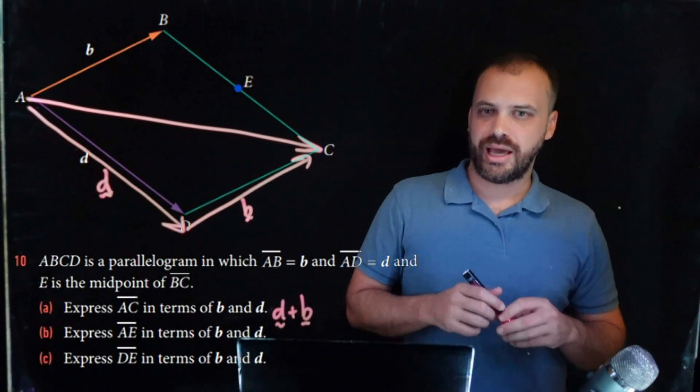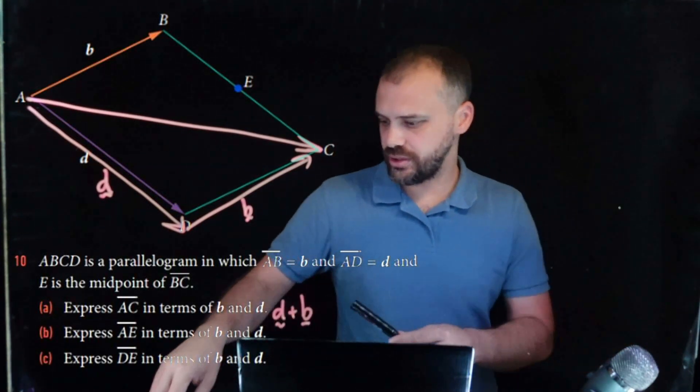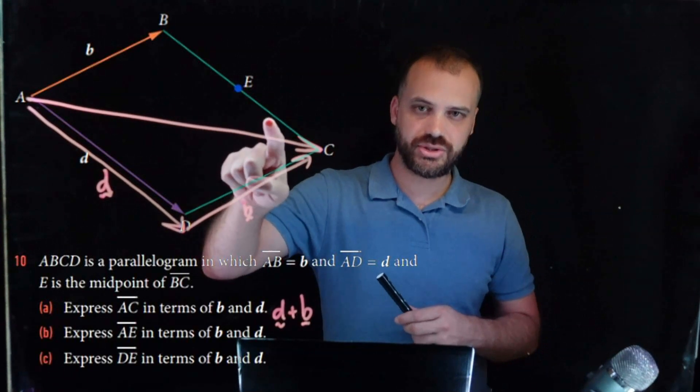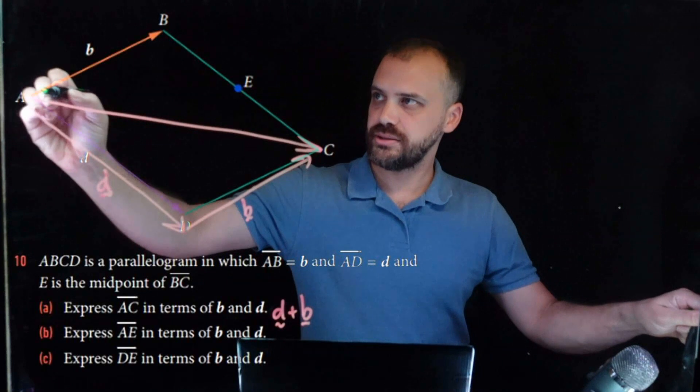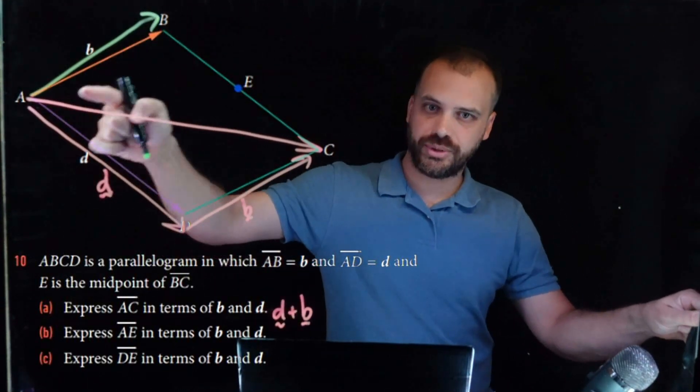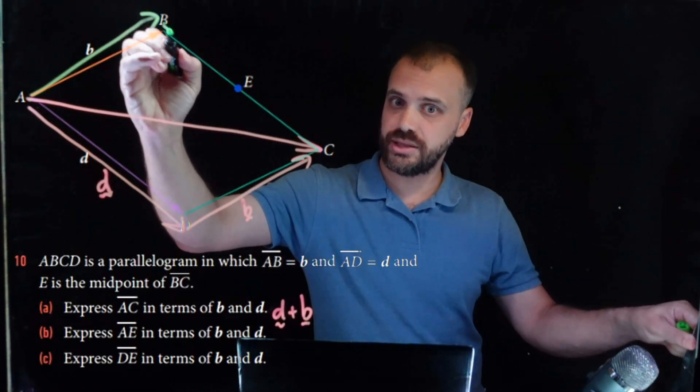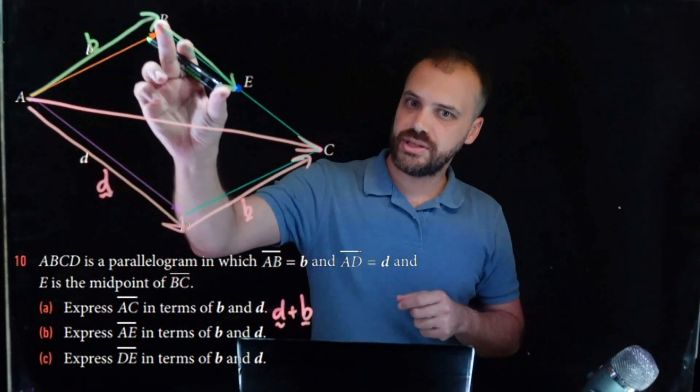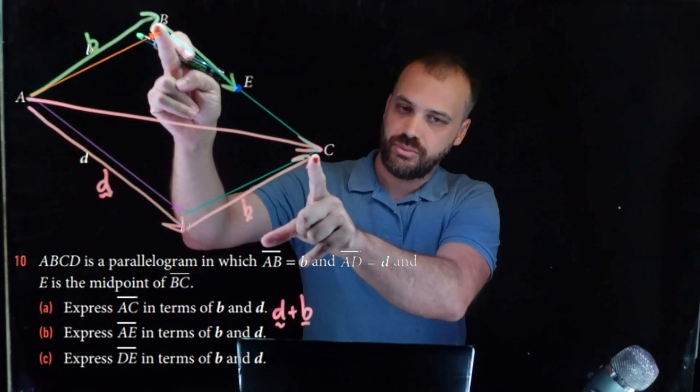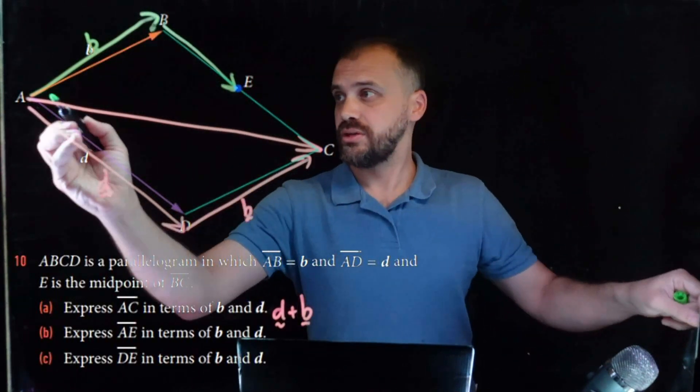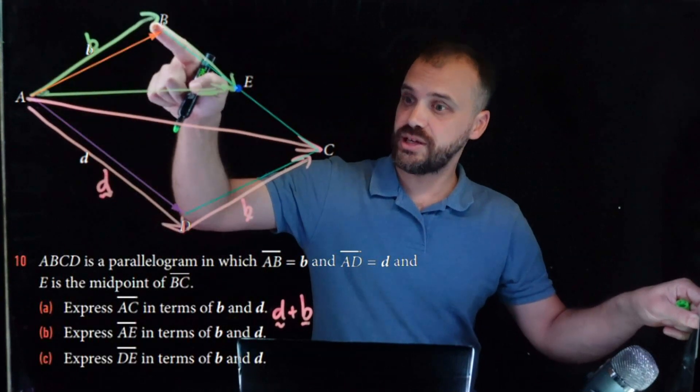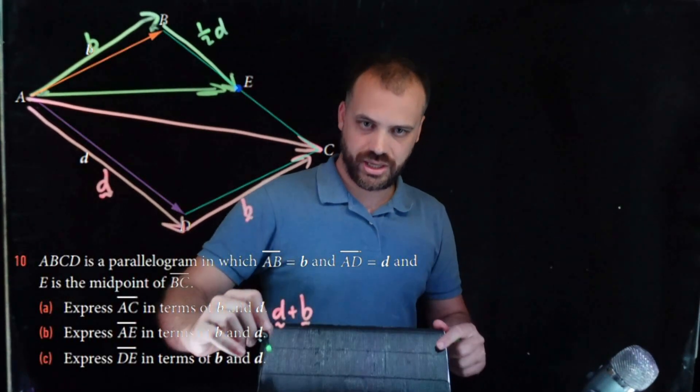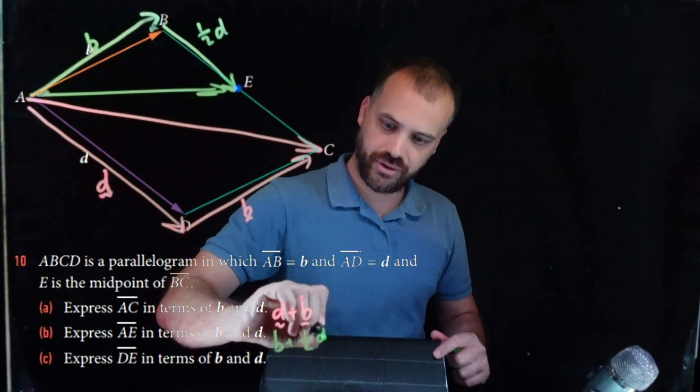Alright, well, what about A to E? So if we want to do A to E, where E is the midpoint between these two, the way that we're doing that is going from A to B, just following that line there, and then from here down to there. This vector here is vector B, we can see that, and this is exactly half of this, which means it's half of vector D. So the vector AE, this vector here, is equal to this vector B plus this vector, which is half of D. So our answer to that question is B plus half of D.